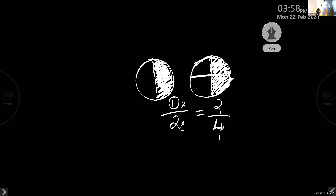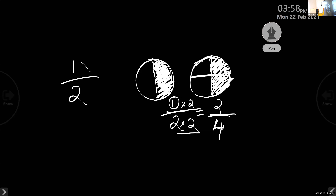By which number do I multiply 1 by 2 to get 2 by 4? We have to multiply with 2. So 1 times 2 is 2, and 2 times 2 is 4. I can make another equivalent fraction from 1 by 2 by multiplying both numerator and denominator by the same number.